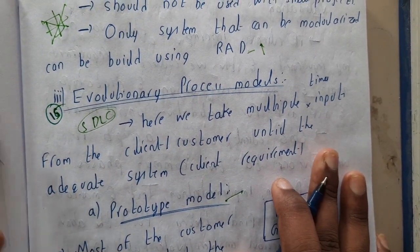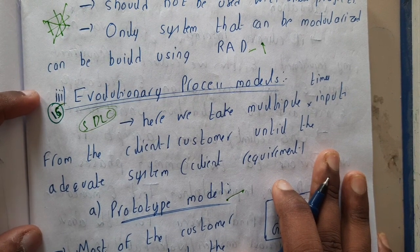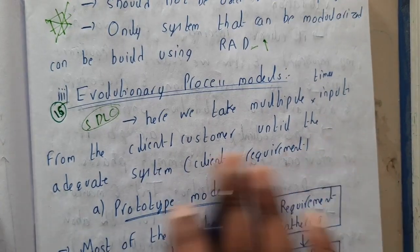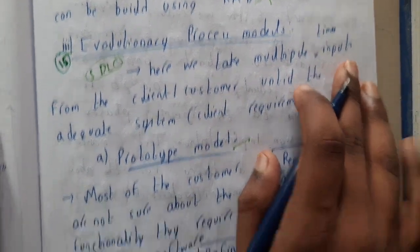In this lecture let us go through evolutionary process model. In evolutionary we are having three different process models. In this lecture we will be going through prototype model. Here we take multiple times input from the client or customer until the adequate system requirement and client requirements are gathered.